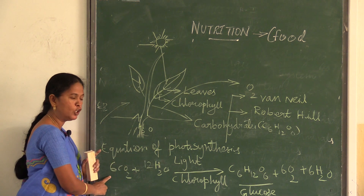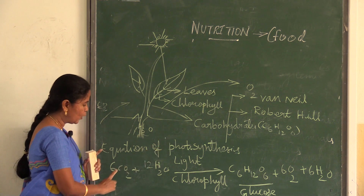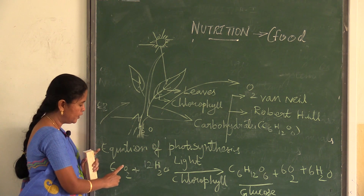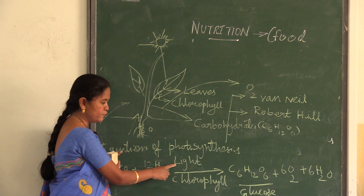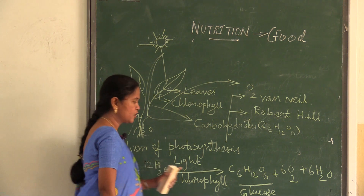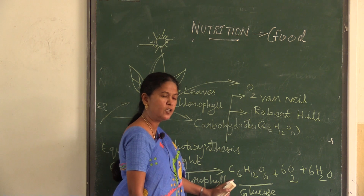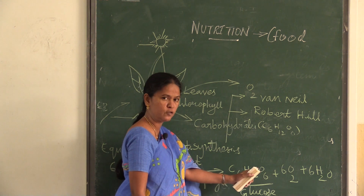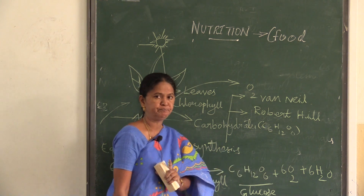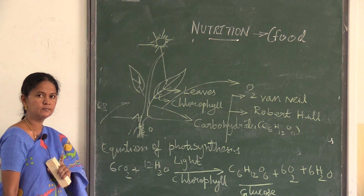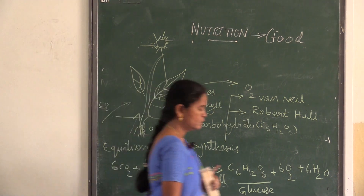In the equation of photosynthesis, simple molecules — carbon dioxide and water — in the presence of light and chlorophyll are converted to complex molecules, carbohydrates. Along with carbohydrates, 6 molecules of oxygen and 6 molecules of water are produced.